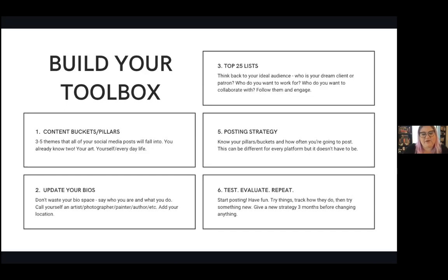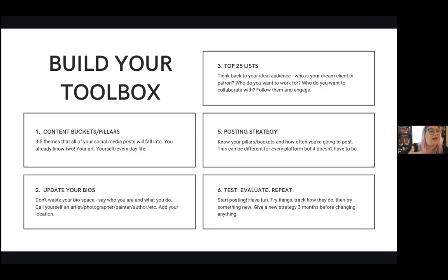Make sure you're giving yourself enough time to really understand what content is working. Put your content pillars in place, get your main topics down, and then give yourself three months of posting consistently with those pillars and see how your engagement and followers go. Three months seems to be the sweet spot for being able to recognize what content is actually being shared, because not everybody is going to see your content at the same time or at the same rate.